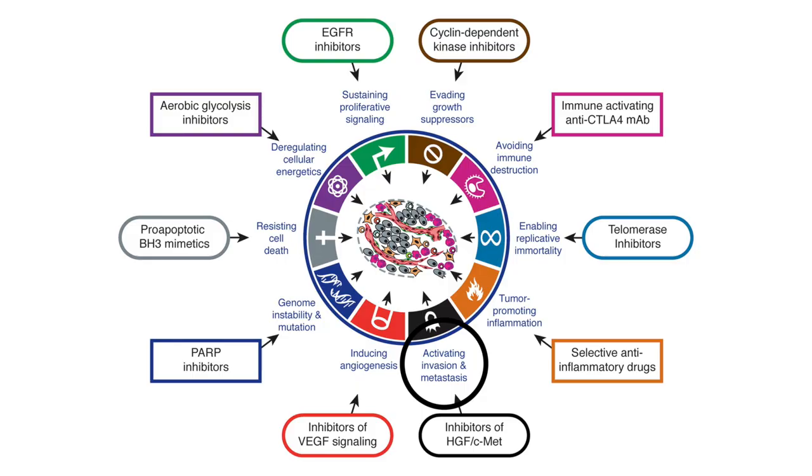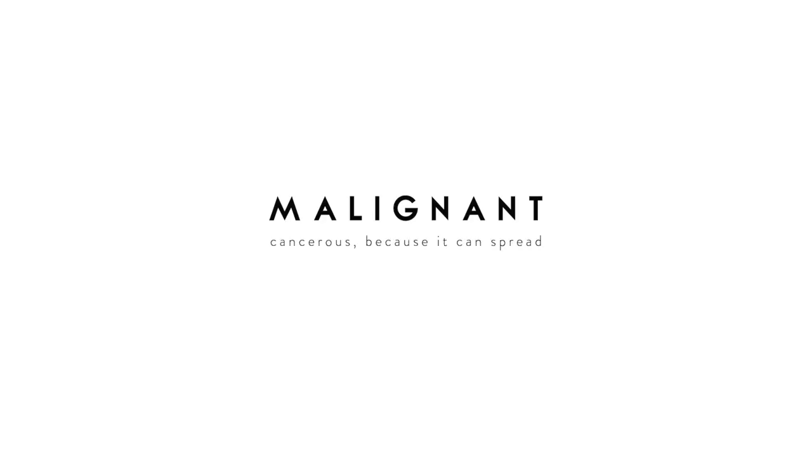Hallmark six is activating invasion and metastasis. Metastasis is the spread of cancer cells around the body. Benign tumors are non-cancerous and don't have the ability to spread — for example, a mole is a benign tumor. Malignant tumors are cancer because they have the potential to spread and form a secondary tumor somewhere else in the body.